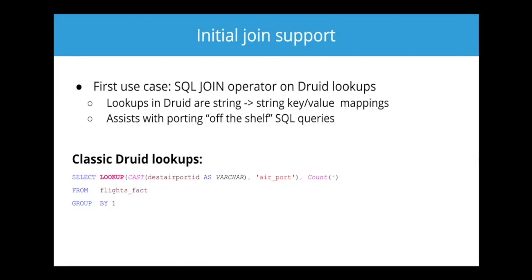The first use case I want to talk about is a SQL join operator on Druid lookups. Classic Druid lookups have been around for a while. They satisfied some of the same cases as joins, but they're not as flexible. One way they're not as flexible is that they're string-to-string key-value mappings, so there's only one key and one value. Lookups in Druid were treated as functions — until now.